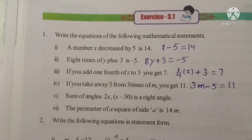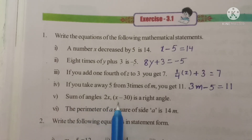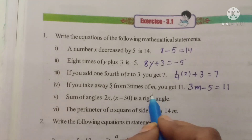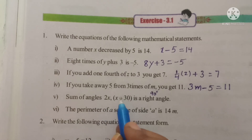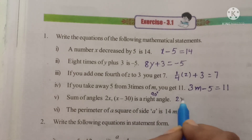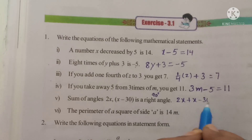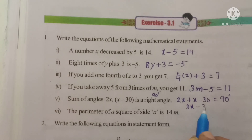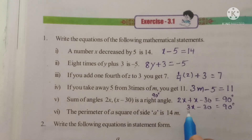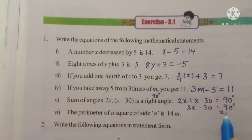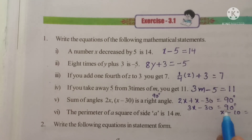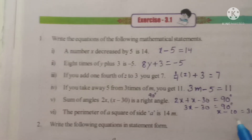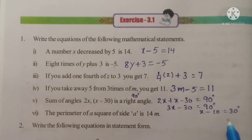Now let's see the fifth one: sum of angles 2x and x minus 30 is a right angle. Right angle means the angle is 90 degrees. So the sum of these two angles is 90 degrees. Write down: 2x plus x minus 30 is equal to 90. So 2x plus x is 3x, minus 30 is equal to 90 degrees. Taking 3 common, x minus 10 is equal to 30 degrees.